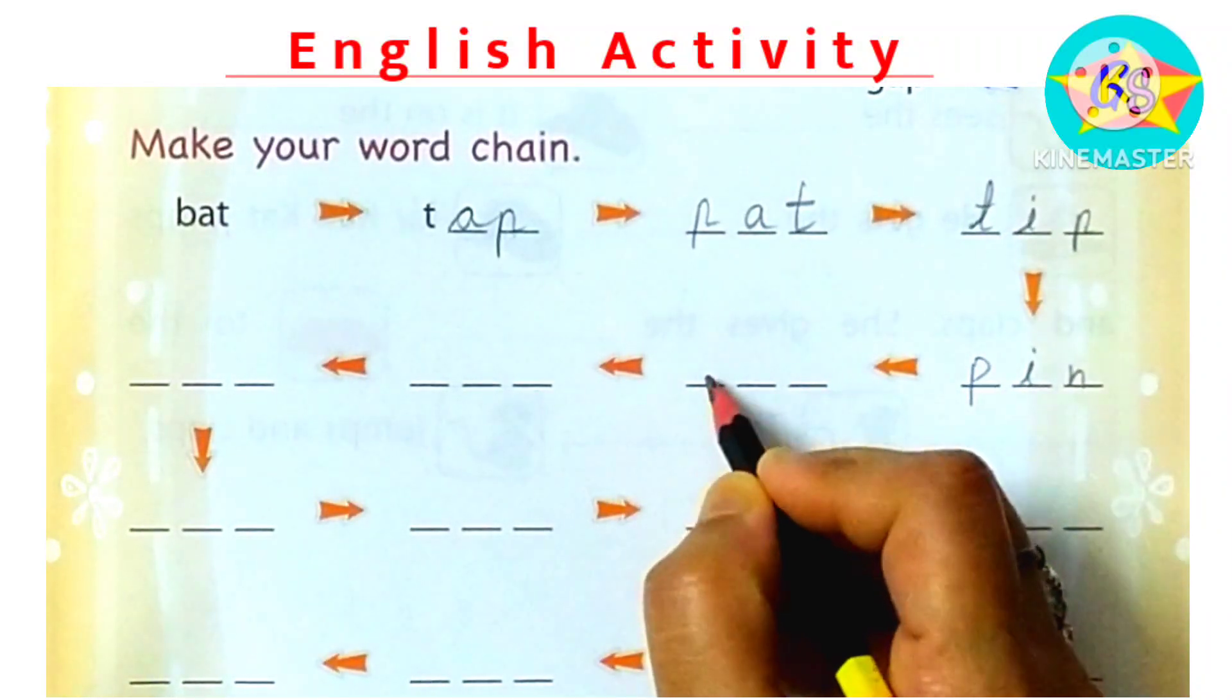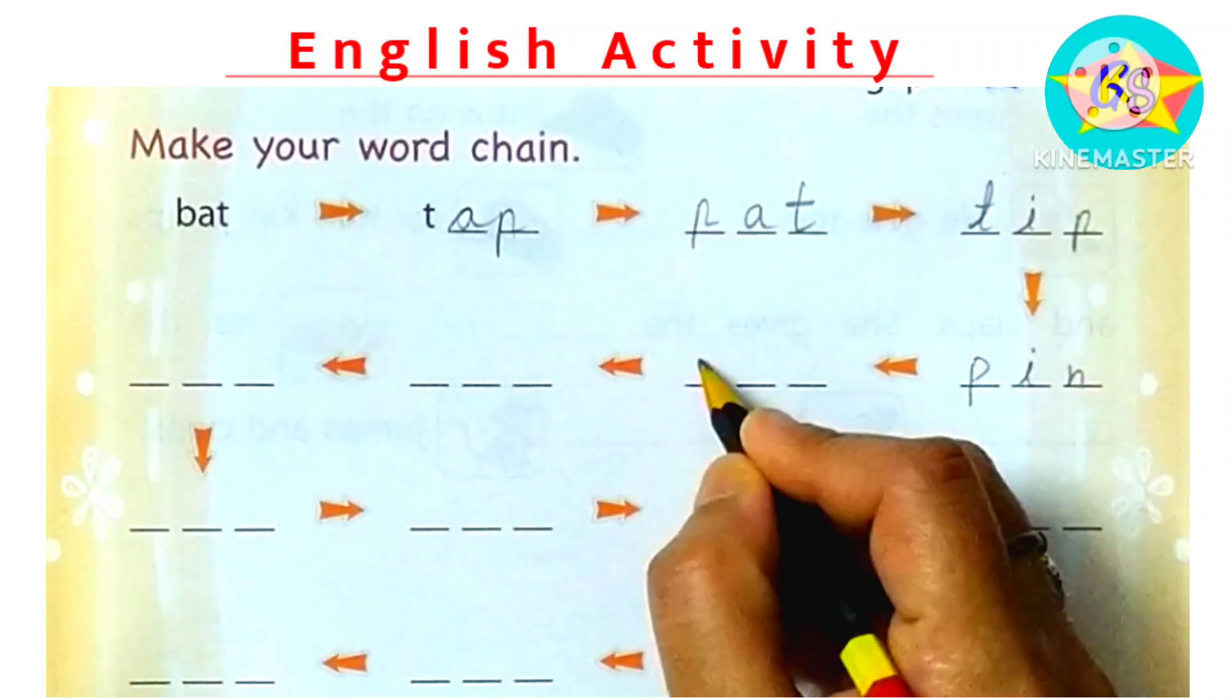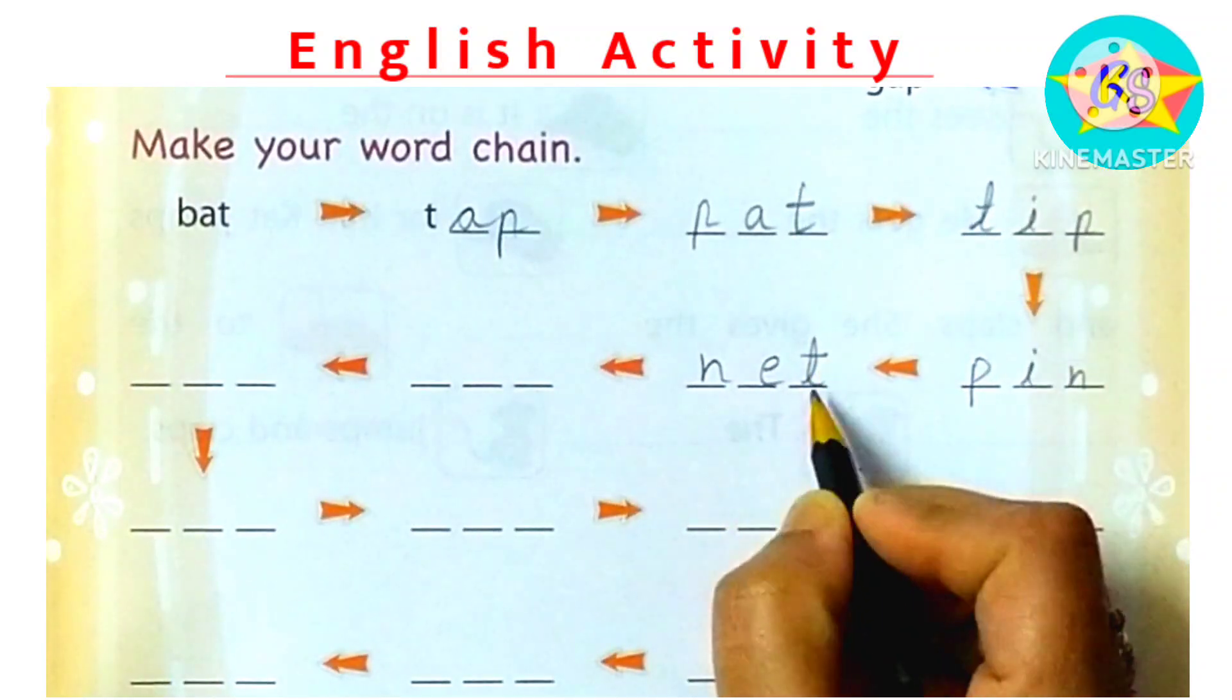So we start from N. With N, we can write three-letter word NET. N-E-T, NET. Then we can write T.